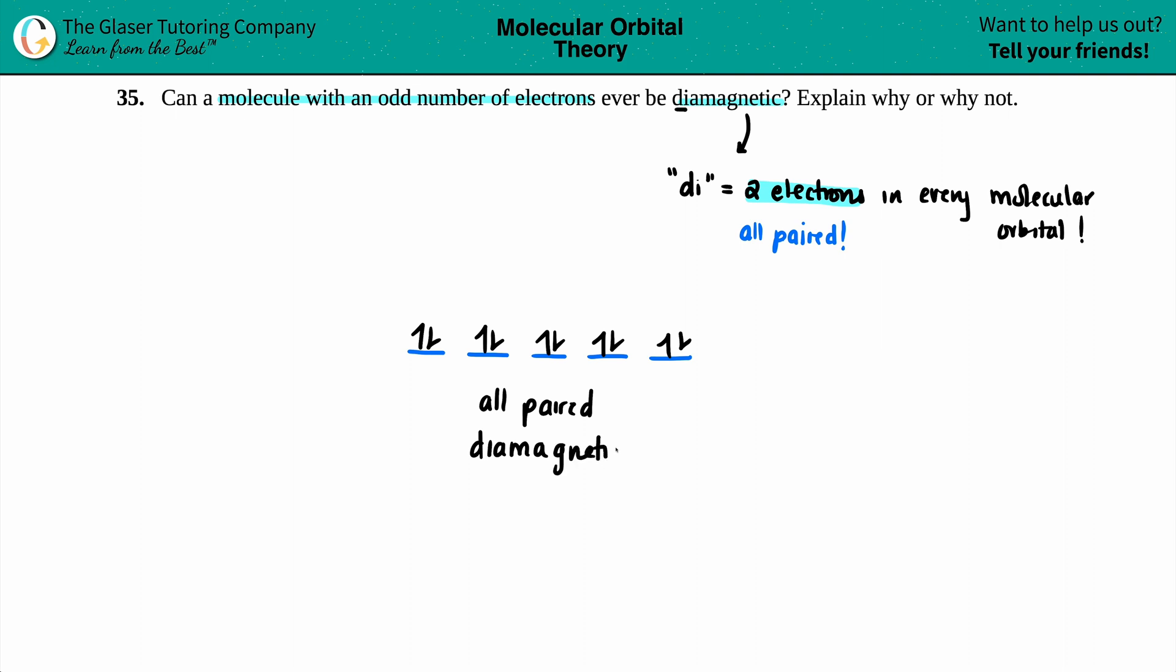But now the question is, can a molecule with an odd number of electrons ever be diamagnetic? Well, what are odd numbers? One, three, five, seven, nine, et cetera. Can those ever all be paired?